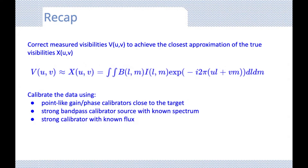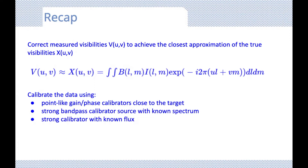Various calibrator solutions exist, but the most common we will touch on are gain or phase calibration, which requires a point-like calibrator target; bandpass calibration, which requires a strong calibrator source with a known spectrum; and flux calibration, which requires a known flux for the calibrated target.